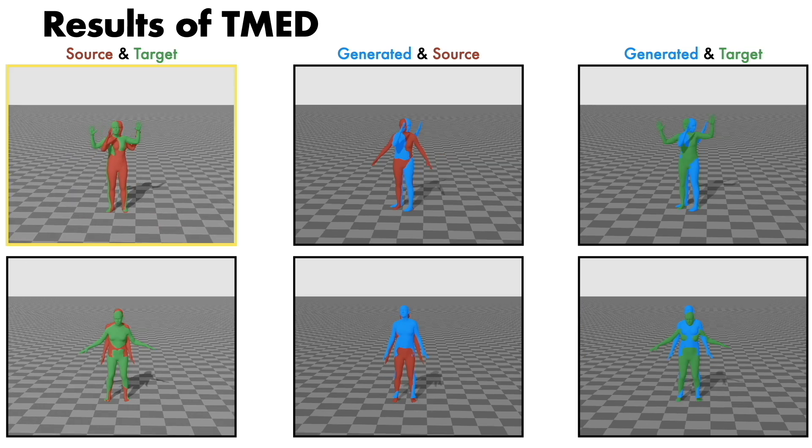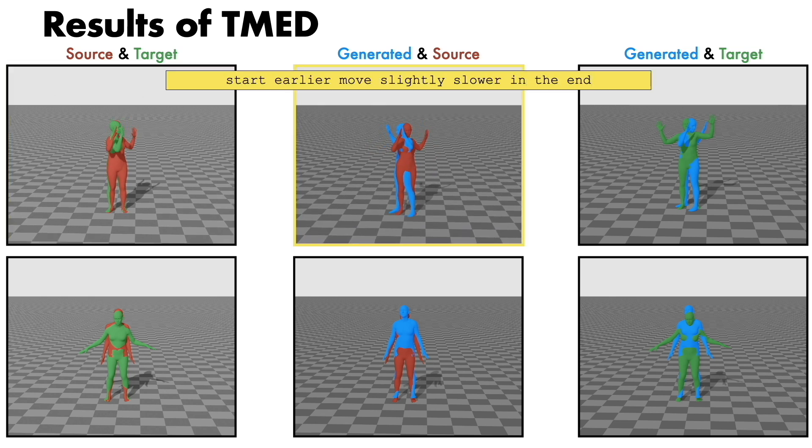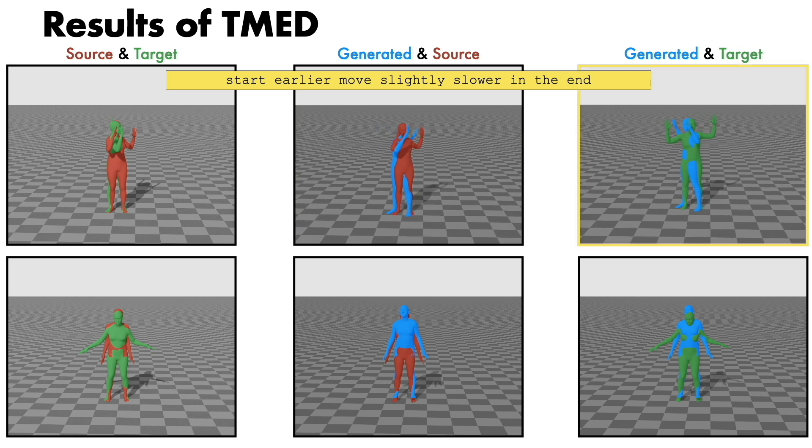Similarly, given the edit text start earlier, move slightly slower in the end, our generation with the hands up rotates the body slower in the end, close to the target animation.